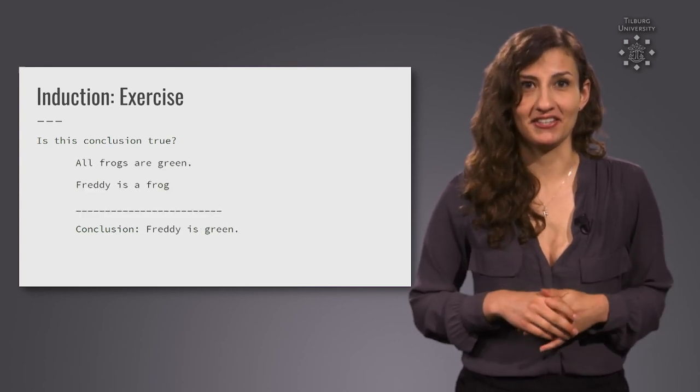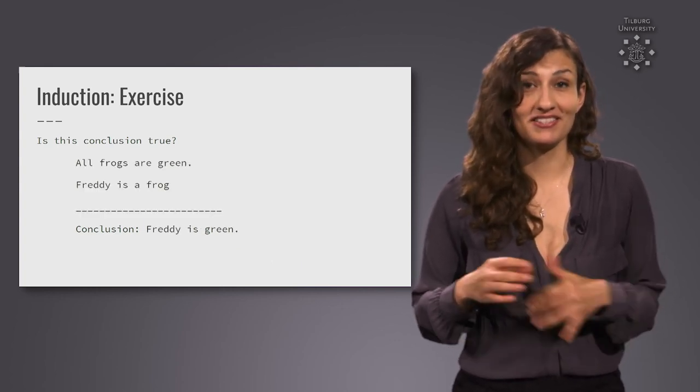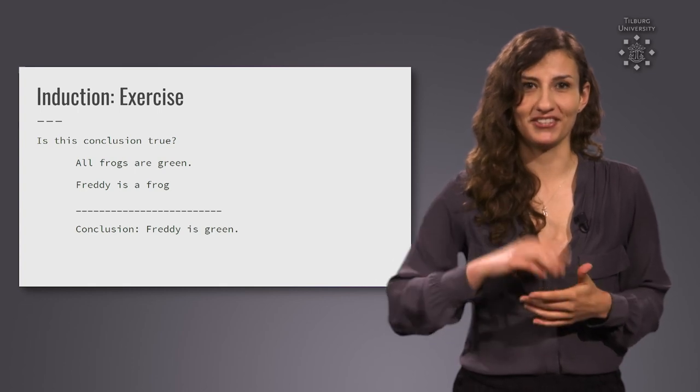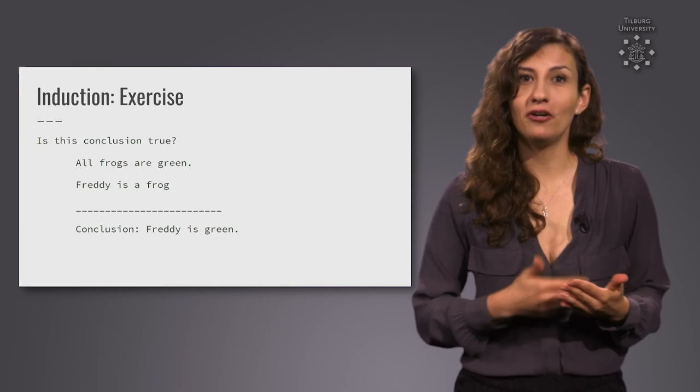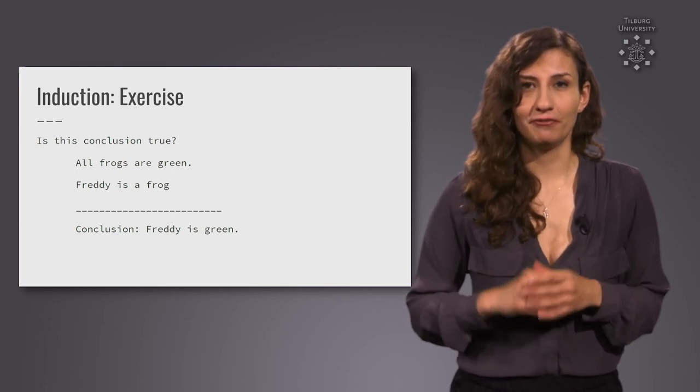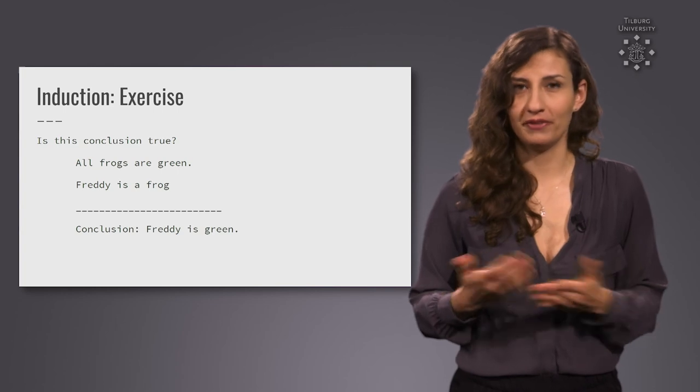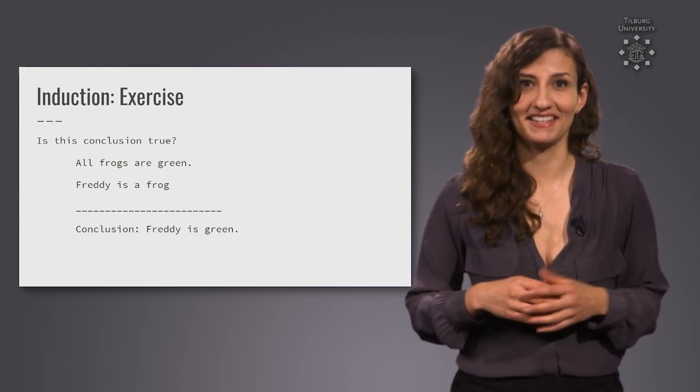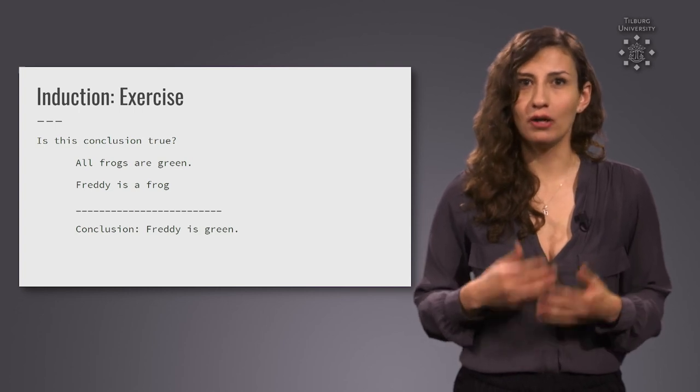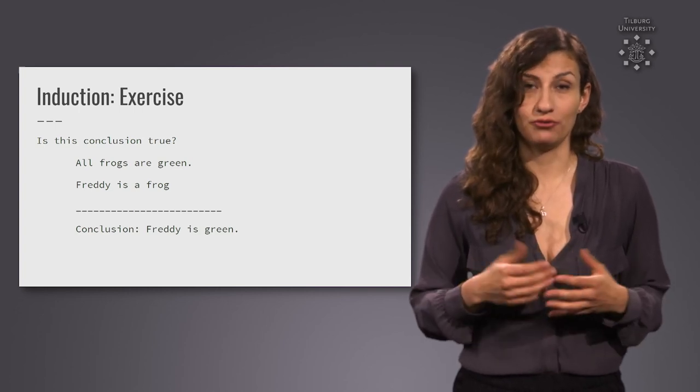Finally, here's a last exercise. You will see this is not actually induction, but rather deduction again. If we know for a fact that all frogs are green, and that Freddy is a frog, can we conclude that Freddy is green? Yes, given that we know for sure that all frogs are green, we can indeed draw this conclusion.